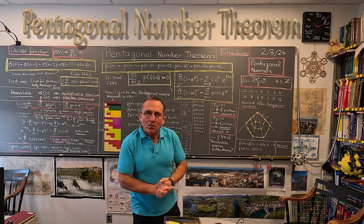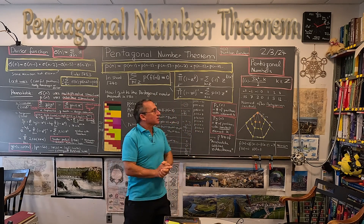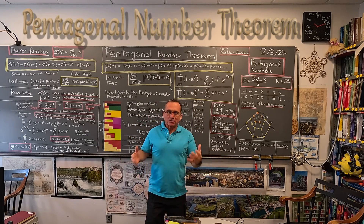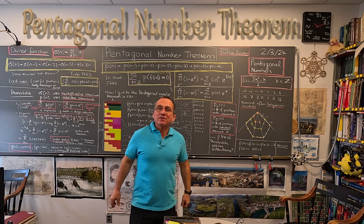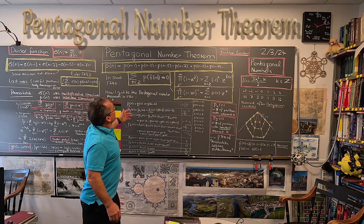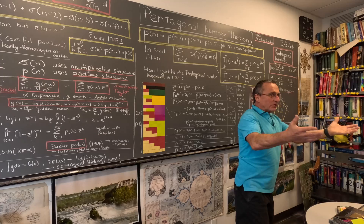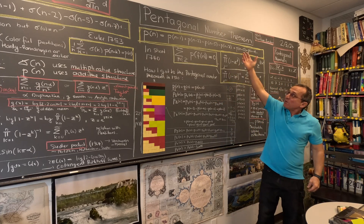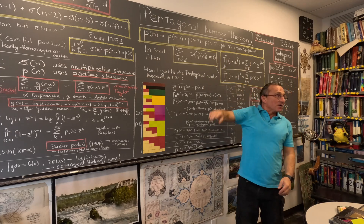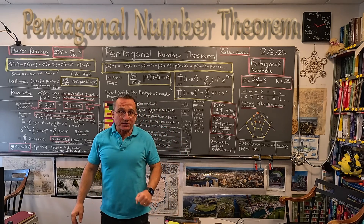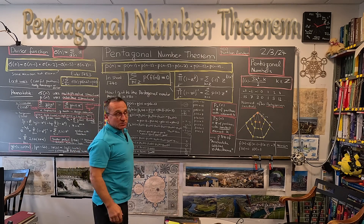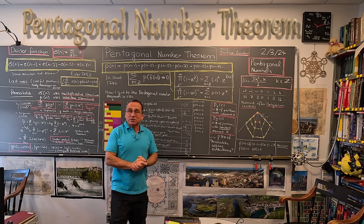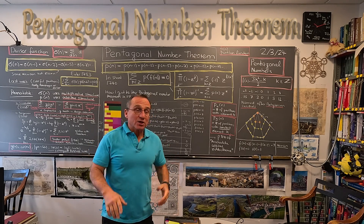Welcome! Let me say something more about the partition function P(N), which Euler already looked at in the mid-18th century. Euler got immediately after he had been asked about this in 1740 — he came up with a nice recursion, and this is called the pentagonal number theorem. It's a recursion which allows you to compute the partition function very quickly.